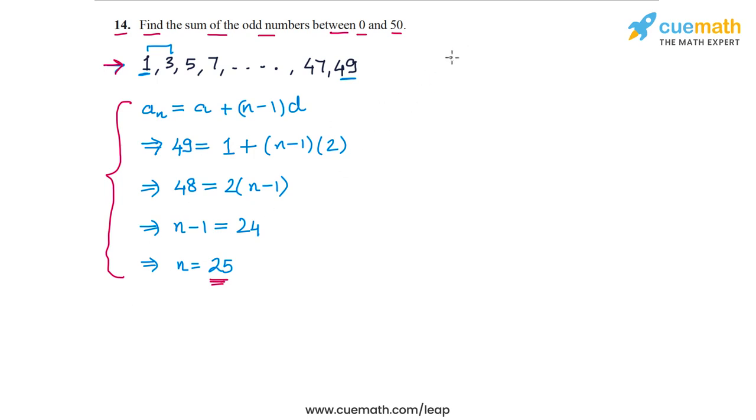To find the sum, I am going to use the relationship SN, the sum of N terms is equal to (N/2) times (A plus L). So let's plug in the values. In this case we will get S25. The sum of these 25 odd numbers will be equal to (25/2) into (A plus L).